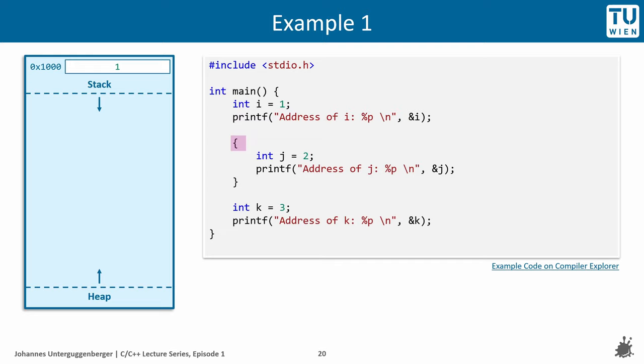First, integer i is put on the stack. Then, a new block is started and the block defines the scope for our stack variables. Within this new block, we create another integer variable, which is, again, put on the stack.